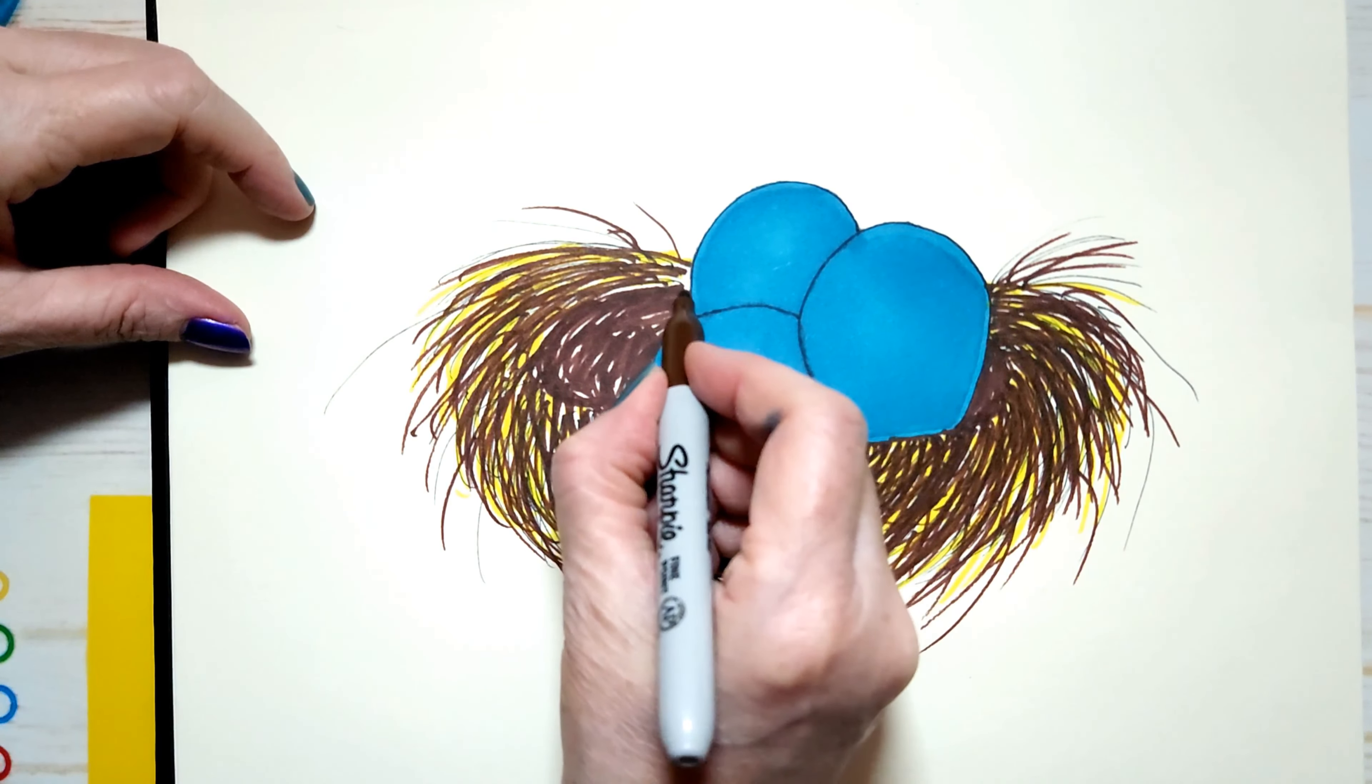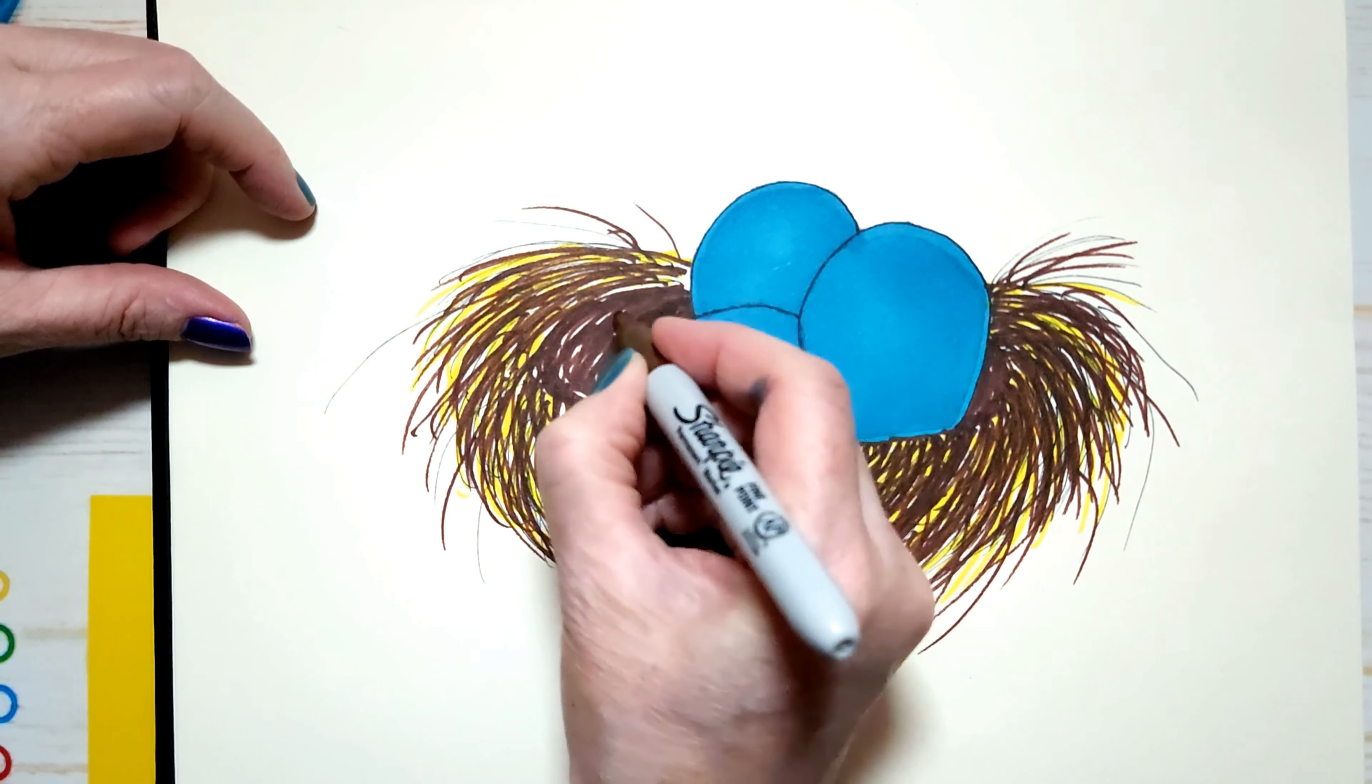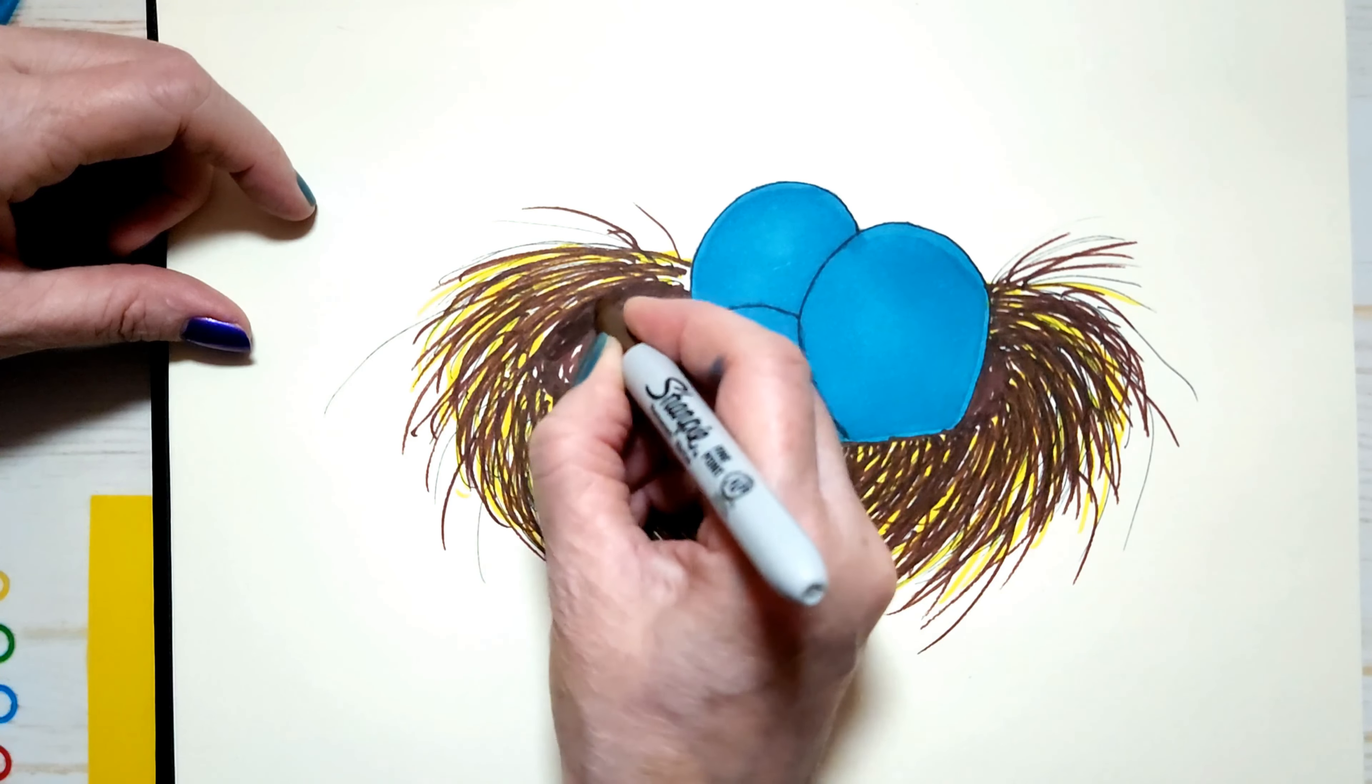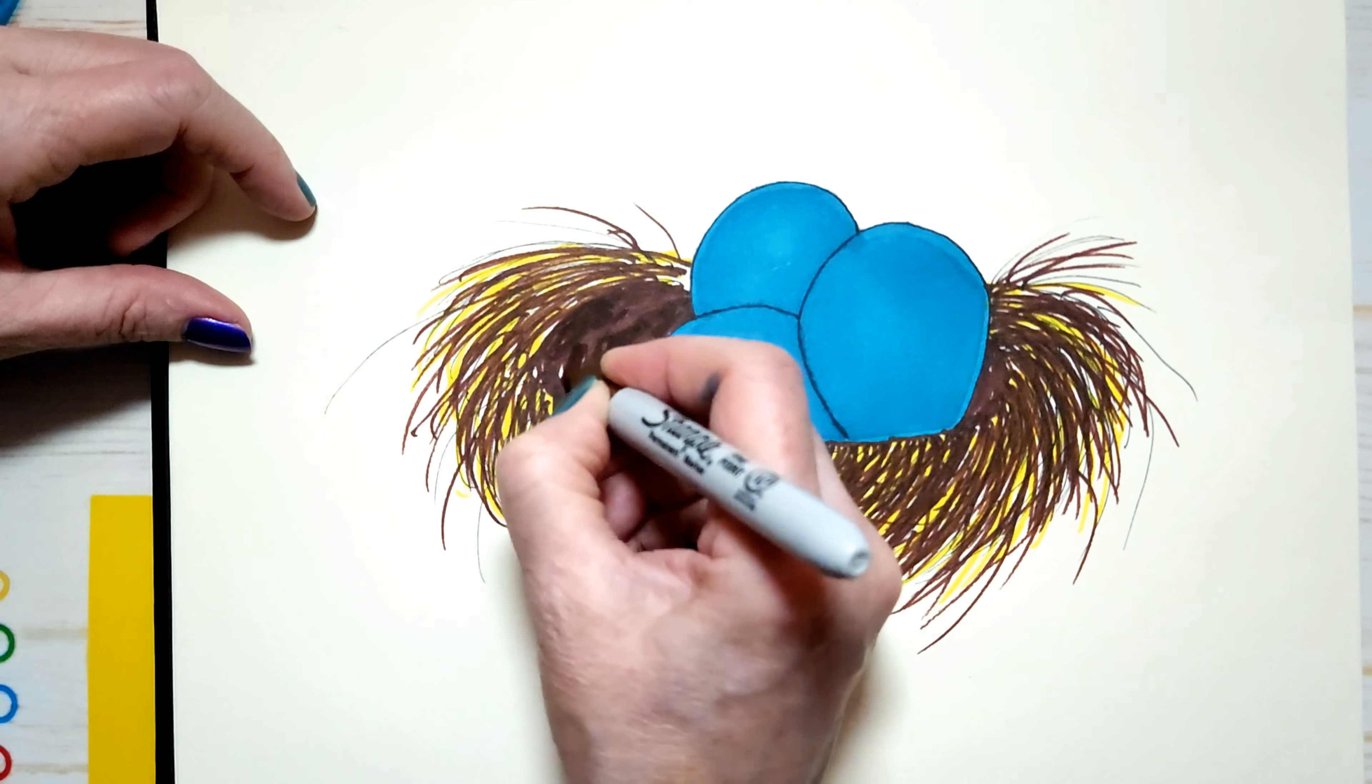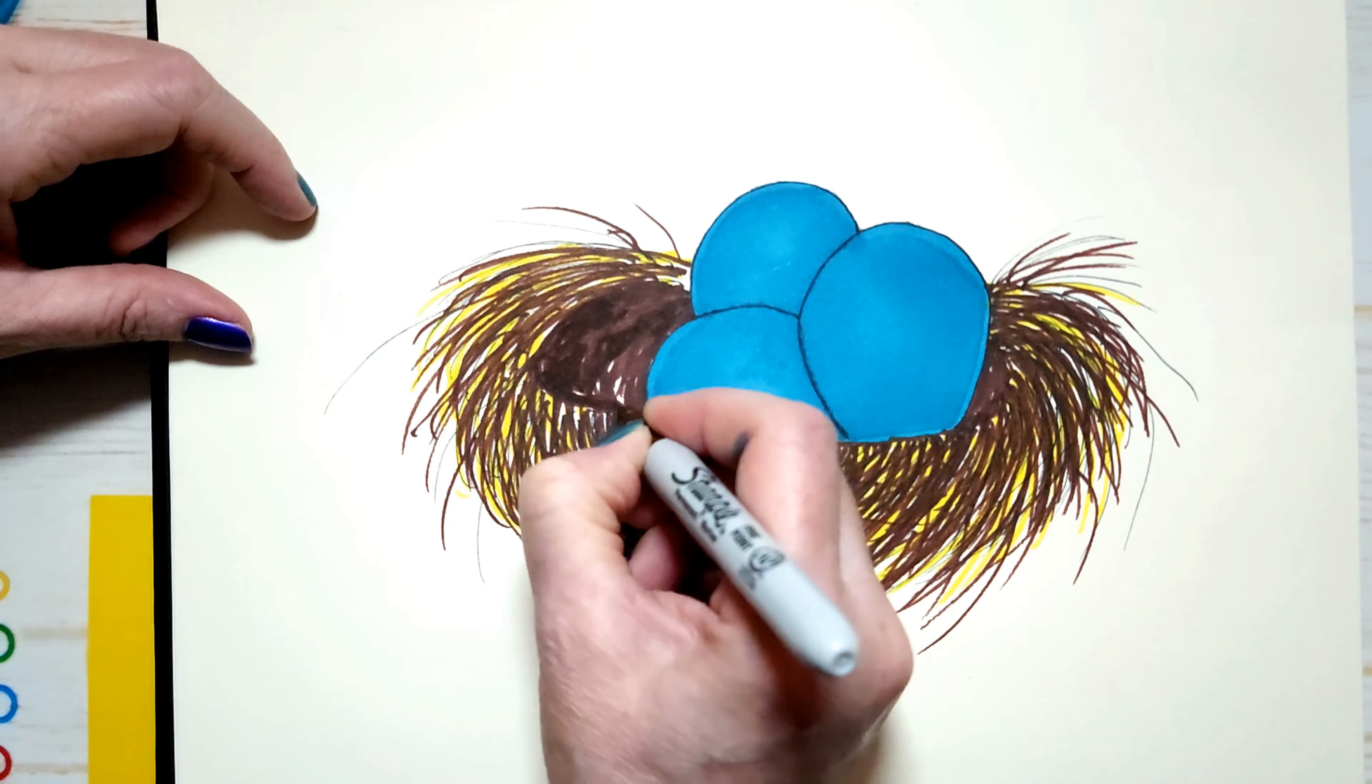I want it to stand out, so that it's obvious that it's the inside of the nest.